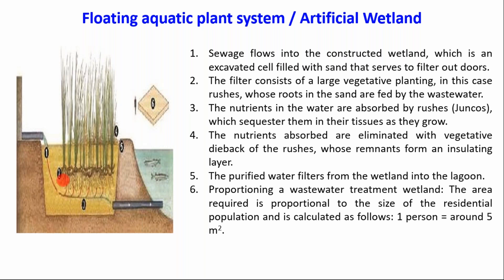Nutrients can be separated out from wastewater with the help of these floating plants. The fourth point: nutrients absorbed are eliminated with the vegetative dieback of the rushes, whose remnants form an insulating layer. The nutrients present as water pollutants are absorbed and separated out by the floating aquatic plant system. The purified water filters from the wetland and can then be sent to lagoons or water bodies.